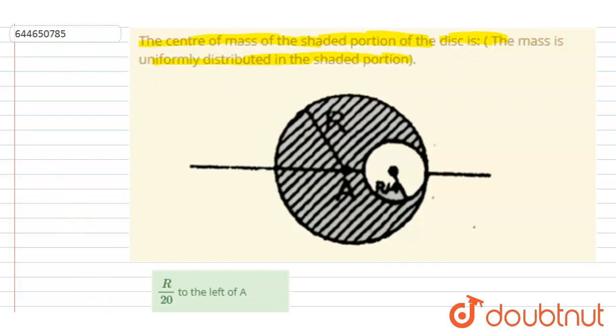So to calculate the center of mass, let us take this as y-axis and this as x-axis. From the symmetry, the center of mass will lie on x-axis. If you see, it is uniformly distributed about the x-axis. So the y-coordinate of the center of mass will be 0.